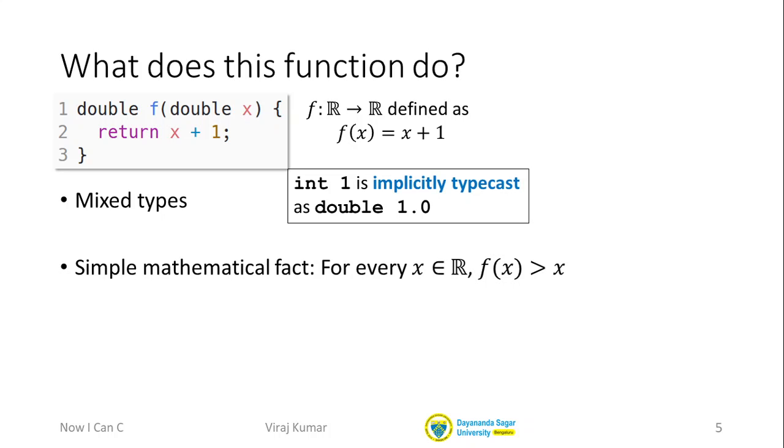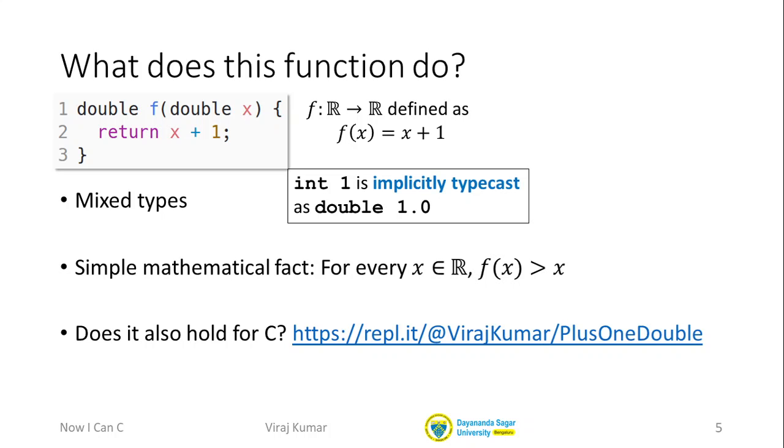Now let's look at this function again. Once again, we have this very simple mathematical fact that for every x that's a real number, f of x should be greater than x, if we are obeying the rules of mathematics. So once again, it may not surprise you that C breaks the rules of mathematics. So I want you to experiment. And here is the link. So once again, try and see if you can find an x for which f of x is not strictly greater than x.